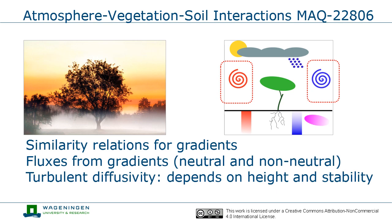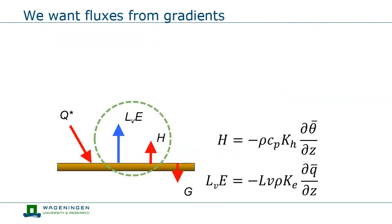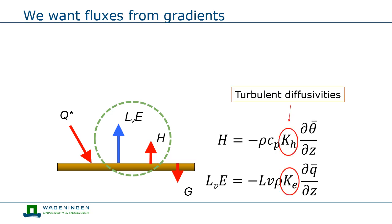We will do that both for neutral and non-neutral conditions. Once we have those expressions, we will discover how the turbulent diffusivity depends on height and stability. Our final aim is to find a way to determine the fluxes of sensible and latent heat from vertical gradients of temperature and humidity. The factor that connects the fluxes to the gradients is the turbulent diffusivity. We can write these equations in this way, but it doesn't tell us what the turbulent diffusivity actually looks like and what it depends on. So actually, the turbulent diffusivity is simply a hypothesis.